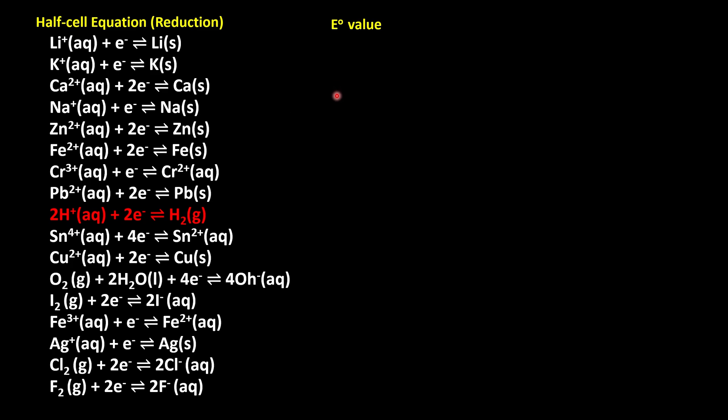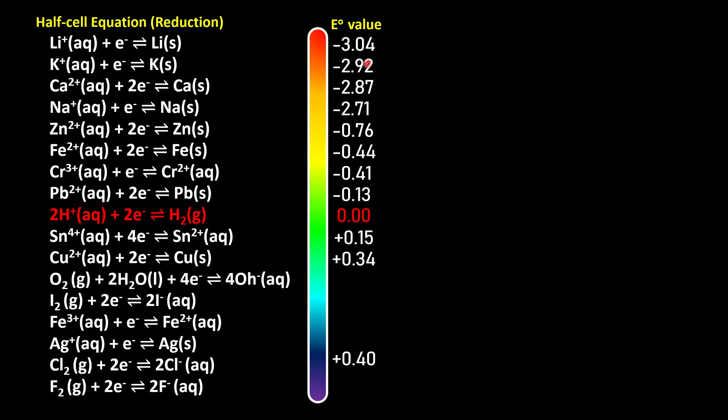As we mentioned before, all of them are given with an E° value where hydrogen is set as zero. Whenever you have a smaller value or a negative number, it means you will lose electrons when they compete with hydrogen.